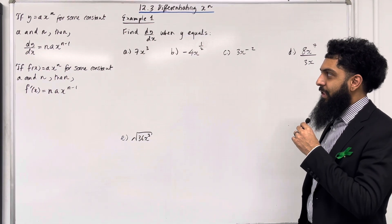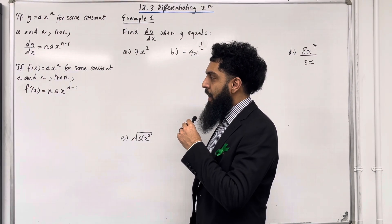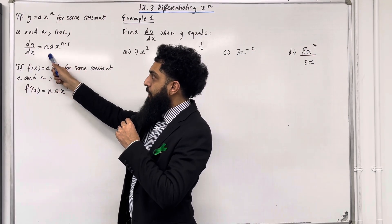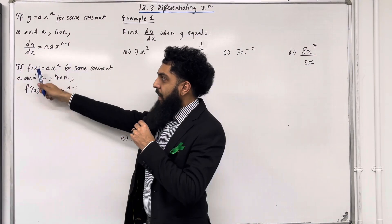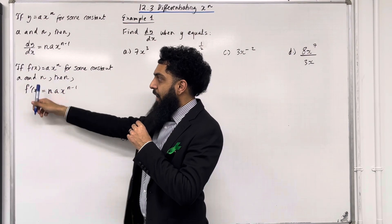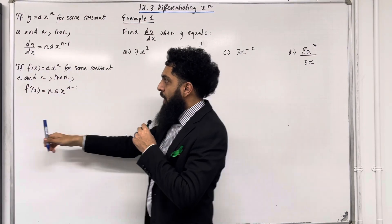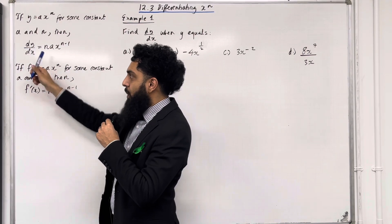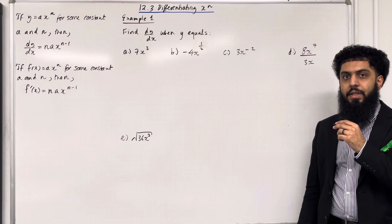Let's go through the key facts of this section. If y is equal to ax to the power n for some constants a and n, then the gradient function dy over dx is given by bringing down the power and subtracting 1 from the power. We can also write this as: if f(x) equals ax to the power n, then f'(x) is given by bringing down the power and subtracting 1. Note that f(x) represents y and f'(x) represents dy over dx.